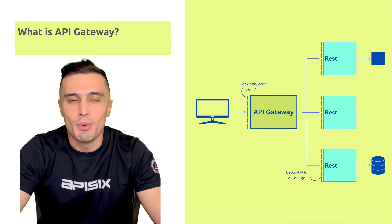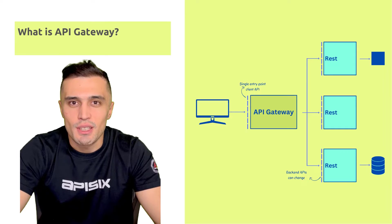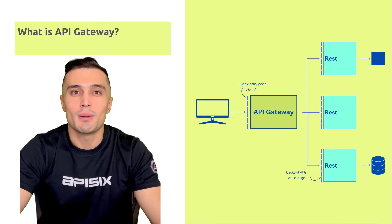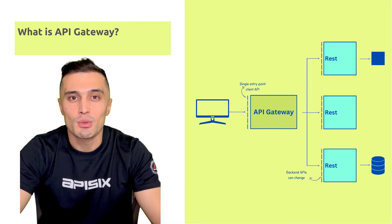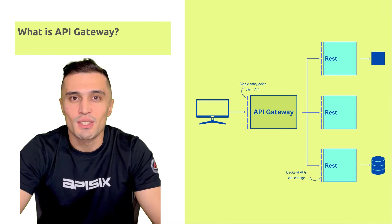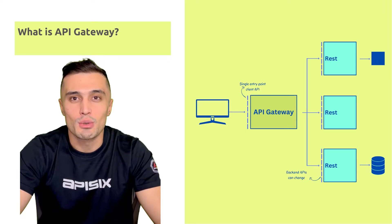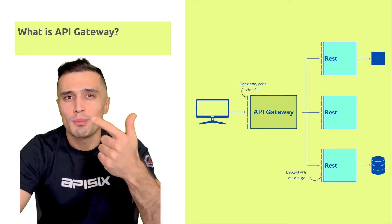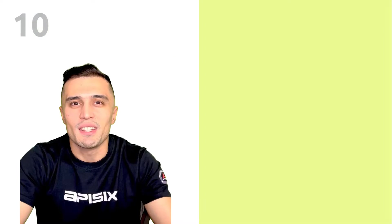An API Gateway is a service that is the entry point into an application from the external world. It's responsible for request routing, API composition, and other cross-cutting functions such as authentication. An API Gateway encapsulates the application's internal architecture and provides an API to its clients. All API requests from external clients first go to the API Gateway, which routes requests to the appropriate service — whether that's an upstream API server, third-party applications, database, or even serverless.